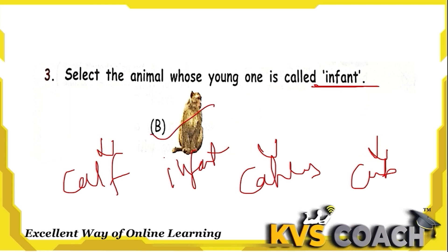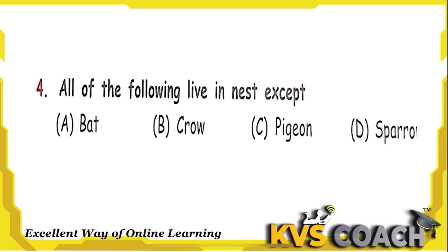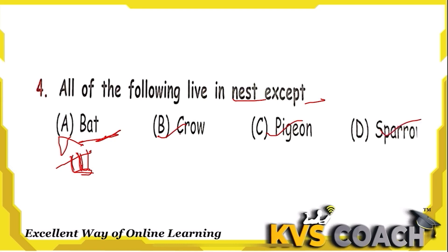Question 4: All of the following live in a nest except — option A is bat. Bat does not live in a nest; it hangs on the branches of trees in a downward direction or lives in caves. Crow, pigeon, and sparrow all live in nests. So bat — option A — is the right answer.